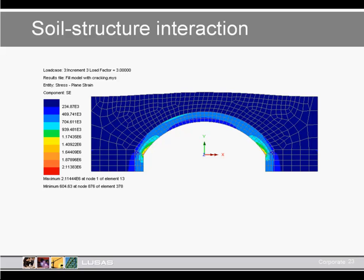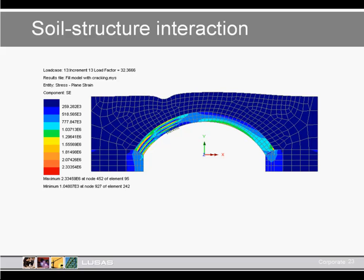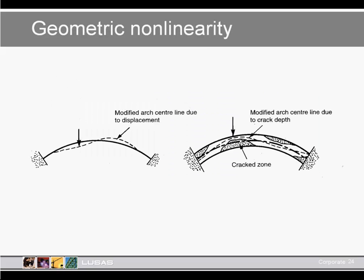In addition to material nonlinearities, we can also consider geometric nonlinearities. This is when the load paths are dependent upon the changes in the structure — as the structure moves, the load paths may change, such as when the centre line of the arch moves so it is no longer in pure bending but begins to take some axial loads. These can be considered through a nonlinear geometric addition to the analysis.